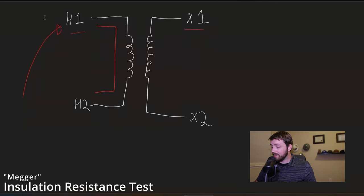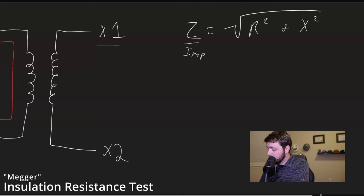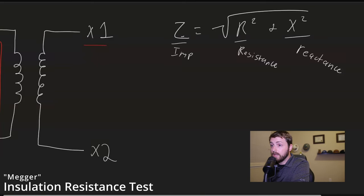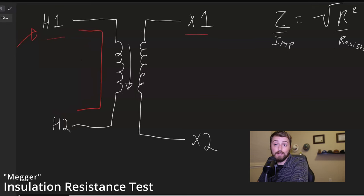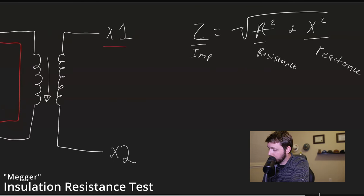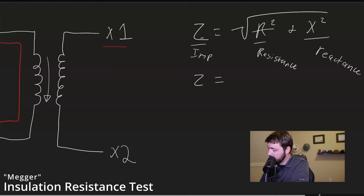Our impedance formula is going to look like Z equals the square root of R squared plus X squared. So this is our total impedance, this is our resistance, and then this is our reactance or our reactive impedance. Again, that's the formula for impedance. So the resistance across this winding is going to be fairly low, it's going to be in the milli to micro ohms, it's going to be a very very small resistance. And we're not pushing a whole lot of current out of our megger, it's a fairly low current application. When we apply voltage it saturates really quickly and we're not pushing current through here, so this resistance I'm going to say we can more or less ignore.